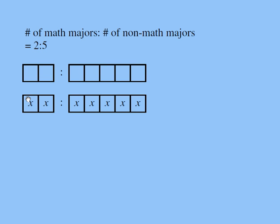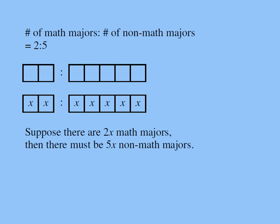So for every two groups of students, each group has x, I'll have five groups of non-math majors. For every two groups of math majors, I will have five groups of non-math majors. Since I don't know the group size, I'm going to call it x. In other words, suppose there are 2x math majors and 5x non-math majors.